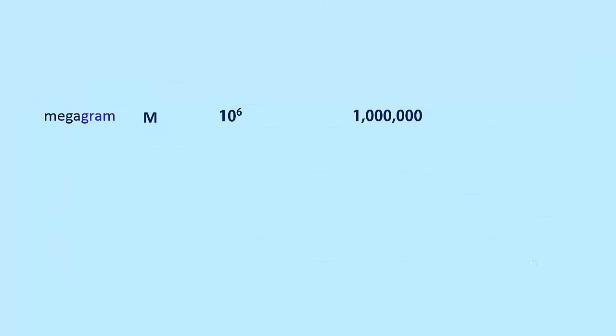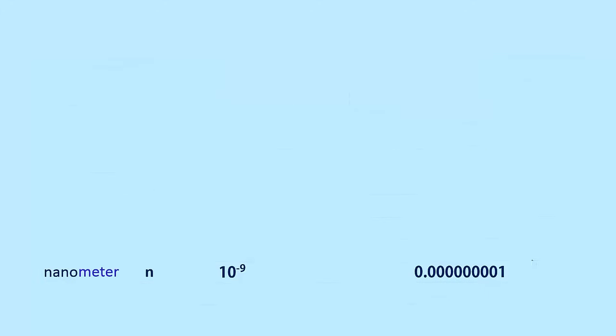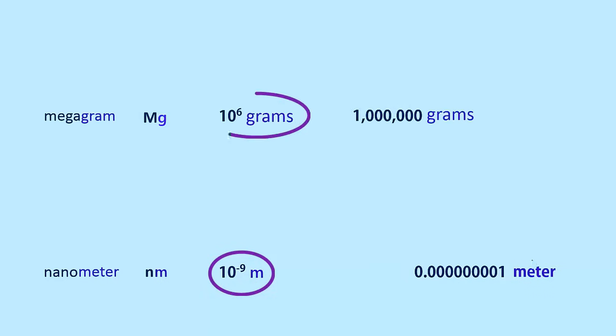For example, there can be megagrams symbolized Mg, which is 10 to the 6 grams or 1 million grams. At the other end of the scale, let's say a meter is our base unit. So we could have a nanometer, which would be symbolized nm, which is 10 to the negative 9 meters or 1 billionth of a meter. You can see that expressing the amount as a power of 10 is much more convenient than writing out the zeros in very large or very small numbers.